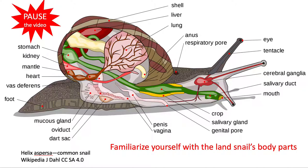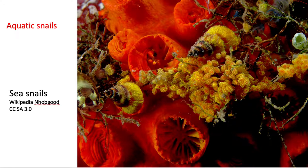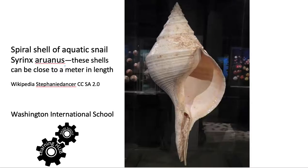Here we look at an aquatic snail — these are sea snails that live in salt water. Some of them are very large; this particular spiral shell can be 90 centimetres or longer.